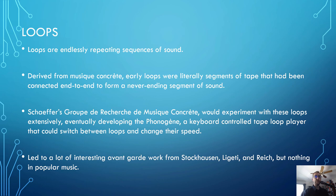The use of loops at the GRM led to interesting avant-garde work from other composers — people like Karl-Heinz Stockhausen, György Ligeti, and Steve Reich all got really into loops. But it didn't really take off in popular music. It was academic, weird, experimental stuff, but it didn't have a lot of popular appeal. Yet.